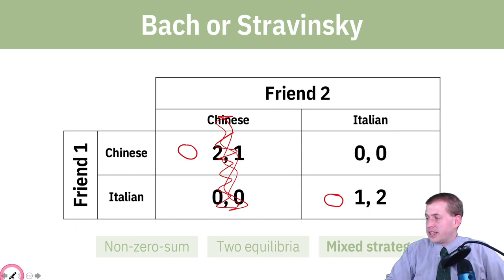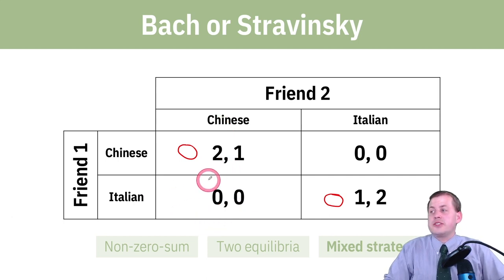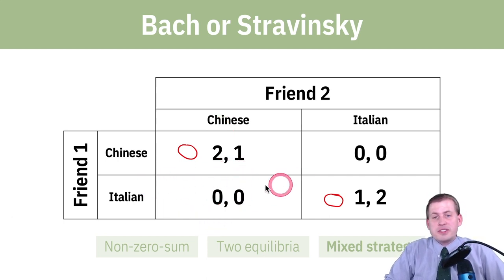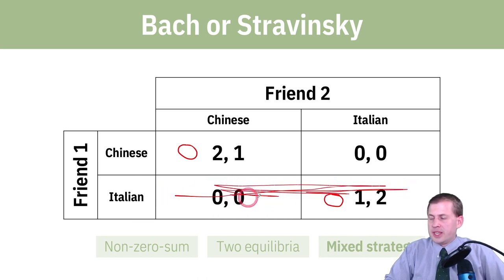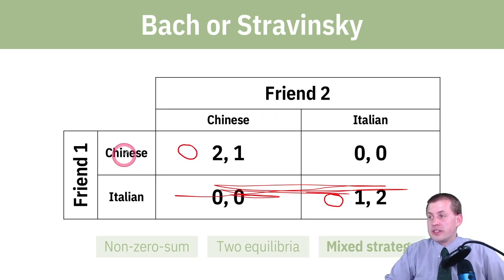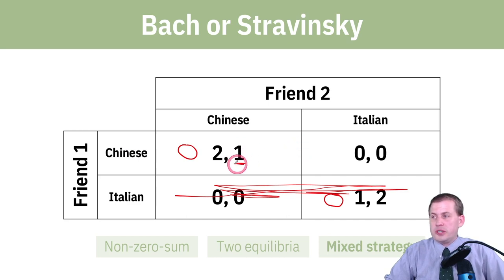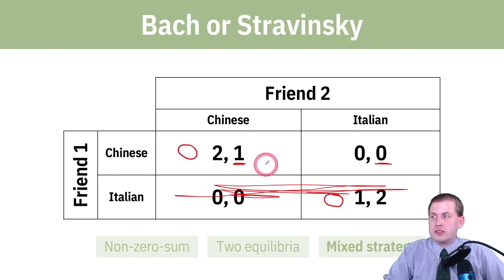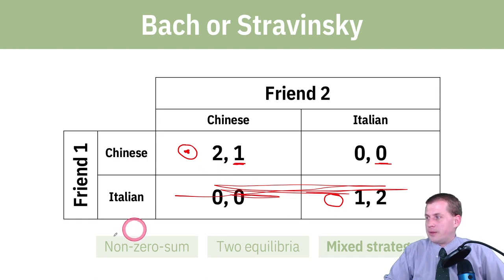Now for player two, we do the same thing but row-wise — cover up one of the bottom rows. If you're friend two and you assume friend one is going to the Chinese restaurant, where should you go? You look at your payoffs: you could get one util if you go to Chinese, or zero utils if you go to Italian. So you should go to Chinese — and we have a Nash equilibrium there, because you're both going to end up at Chinese.